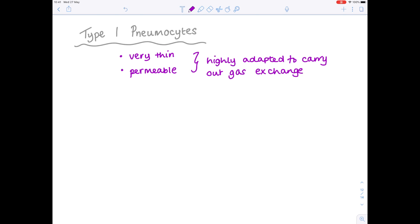And notice that the walls of the alveoli contain only a single layer of these type 1 pneumocytes, meaning that there's a very short diffusion distance.